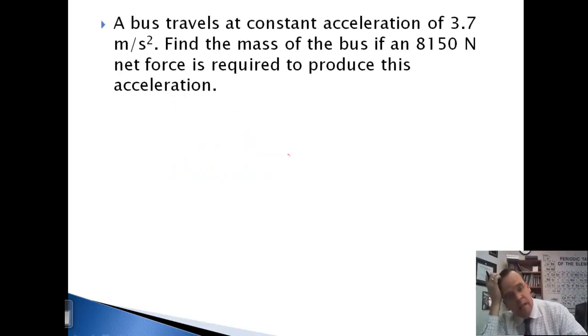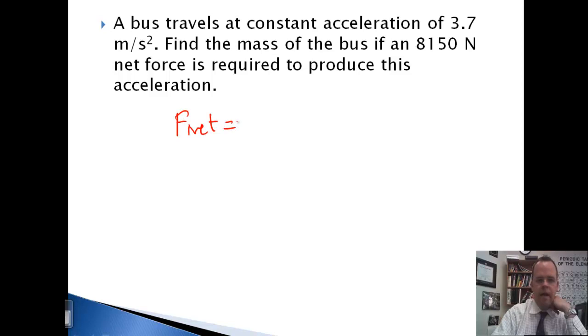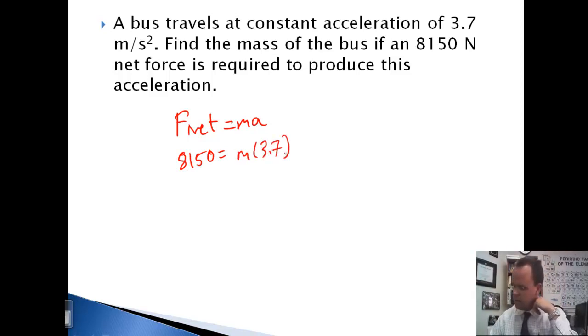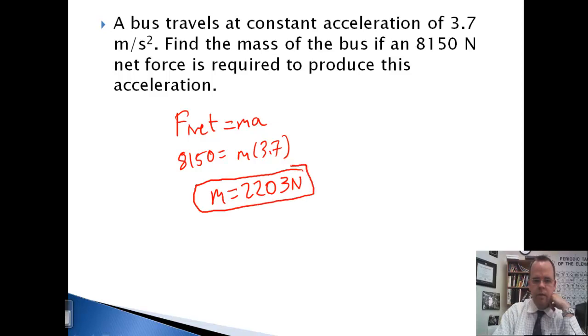Bus travels at a constant acceleration of 3.7 meters per second squared. Find the mass of the bus if a 8,150 newton net force is required to produce this acceleration. F net equals MA. 8,150 equals M times 3.7. The mass of the bus here is 2,203 newtons.